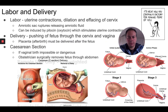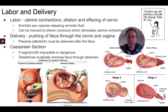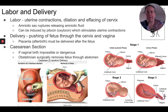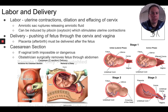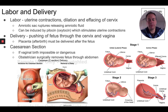During these uterine contractions, the cervix — the opening of the uterus — is dilating and thinning out to allow the fetus to pass through. Those contractions continue, get closer together, and the cervix dilates further. Eventually, typically, the amniotic sac ruptures — commonly called the 'water breaking' — meaning the amniotic sac has ruptured and the fluid inside comes out through the vagina. This is a sign that a woman is going into or moving through labor. Doctors can also administer medications to stimulate contractions and speed up labor if needed.